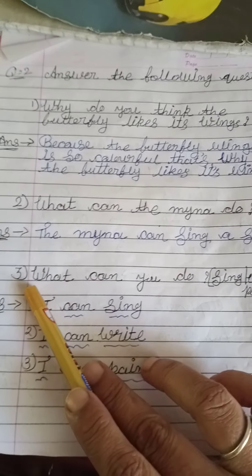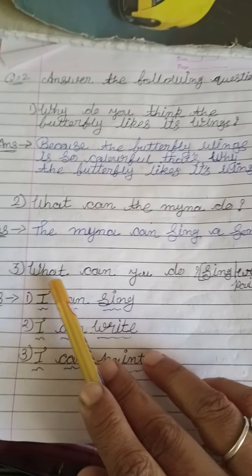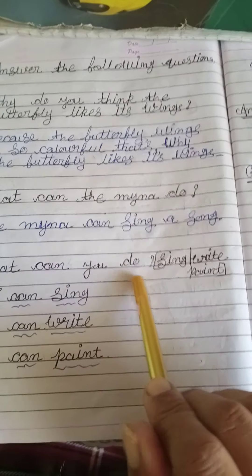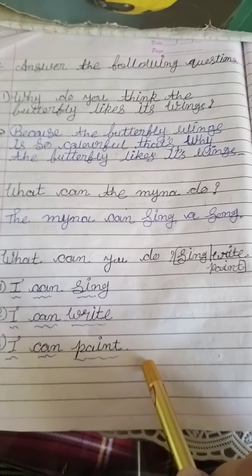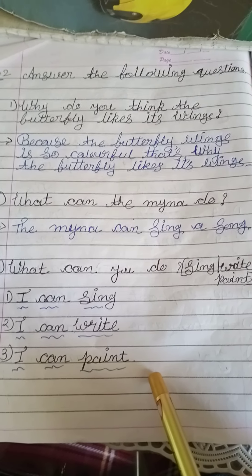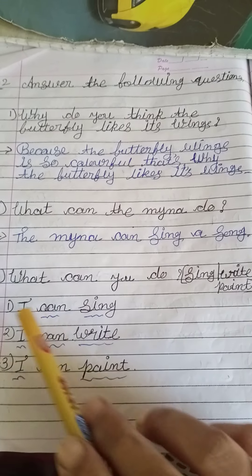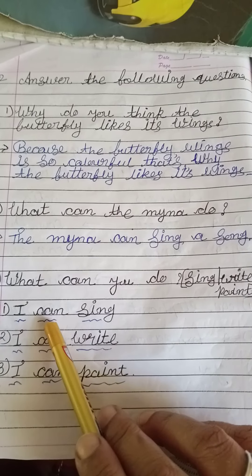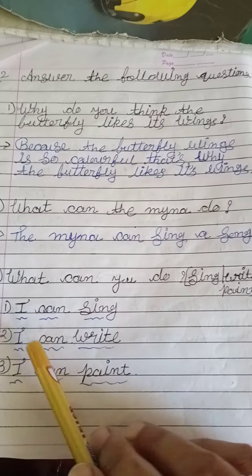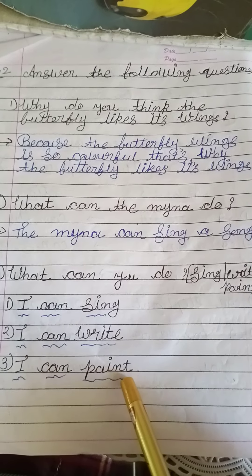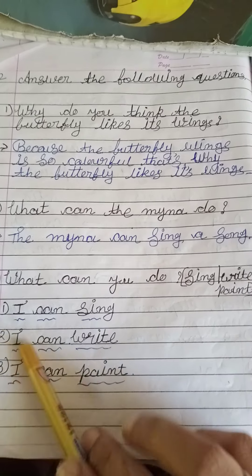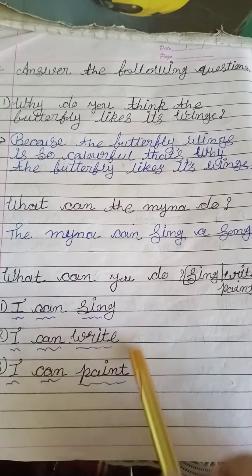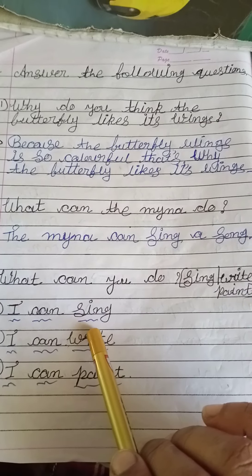यहाँ पर देखो, question number three: What can you do? आप क्या कर सकते हो? तो यहाँ पर लिखेंगे हम: I can sing. I can write. I can paint. I can run. यहाँ पर आप कुछ भी लिख सकते हो।